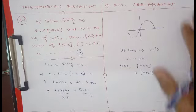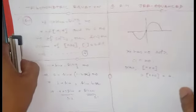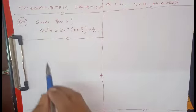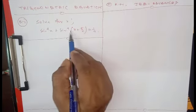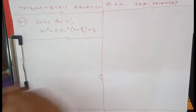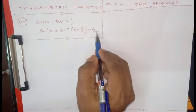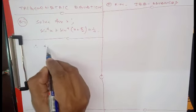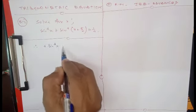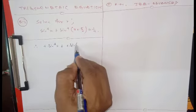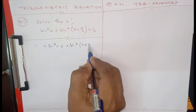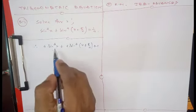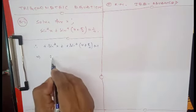Now another very good conceptual question: solve for x — sin⁴(x) + sin⁴(x + π/4) = 1/4. Multiply both sides by 4, so we get 4sin⁴(x) + 4sin⁴(x + π/4) = 1.